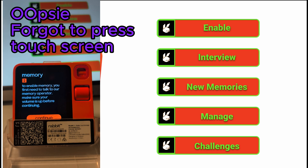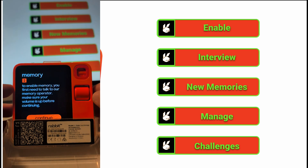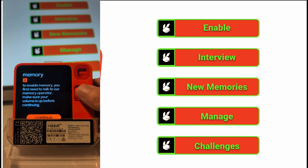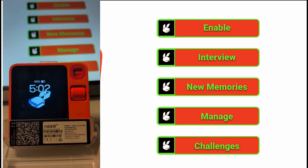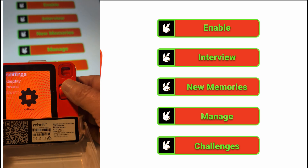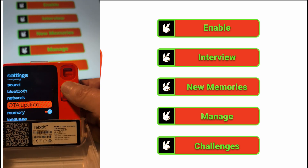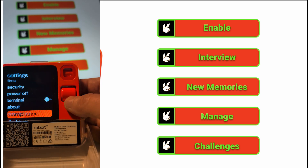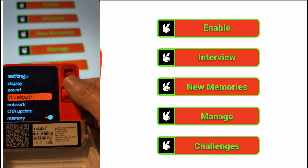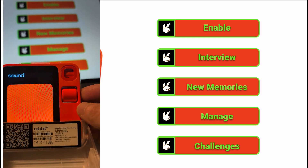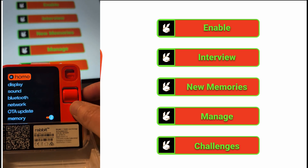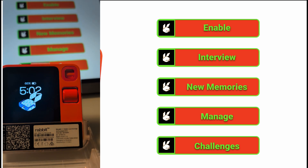To enable memory, you first need to talk to the memory operator — make sure your volume is up before continuing. The device says we will receive a virtual call from the rabbit memory operator, and we tap to answer the virtual call to start the memory interview. So we are going to try to be patient.